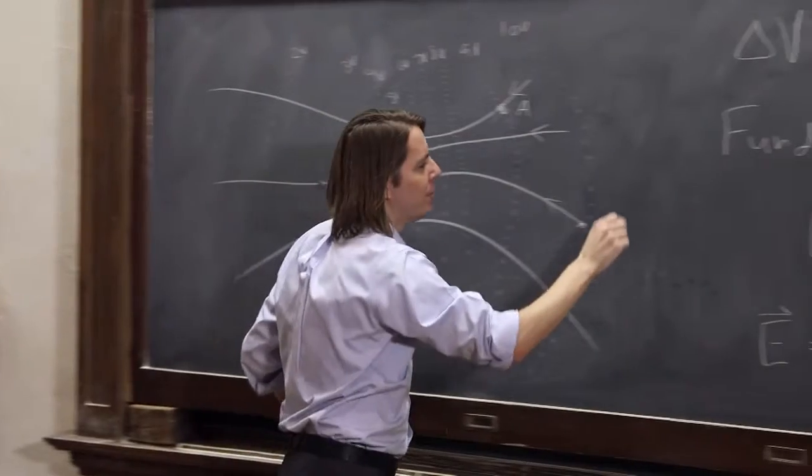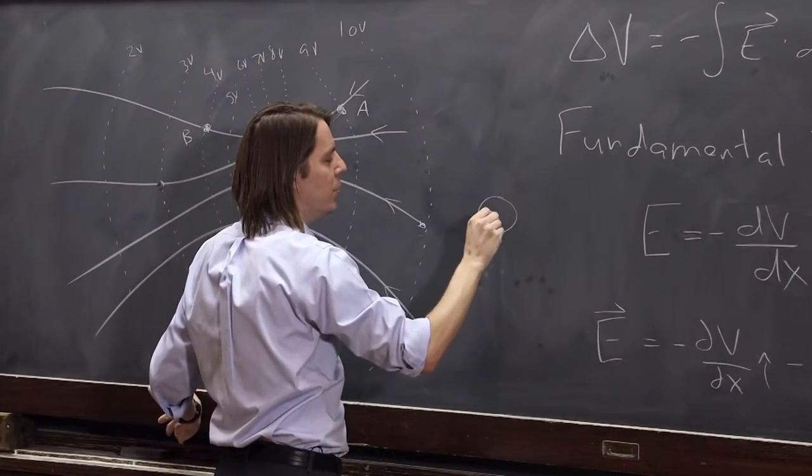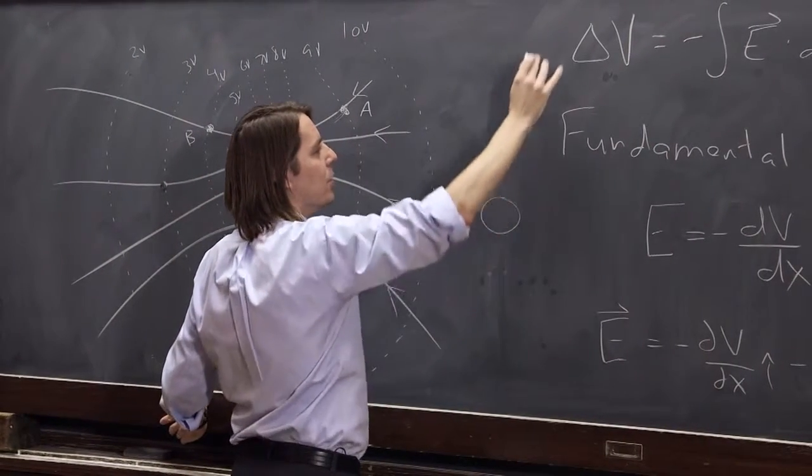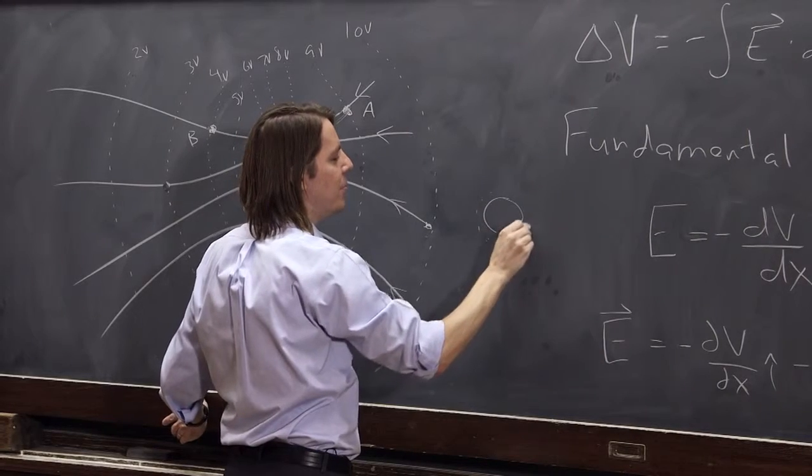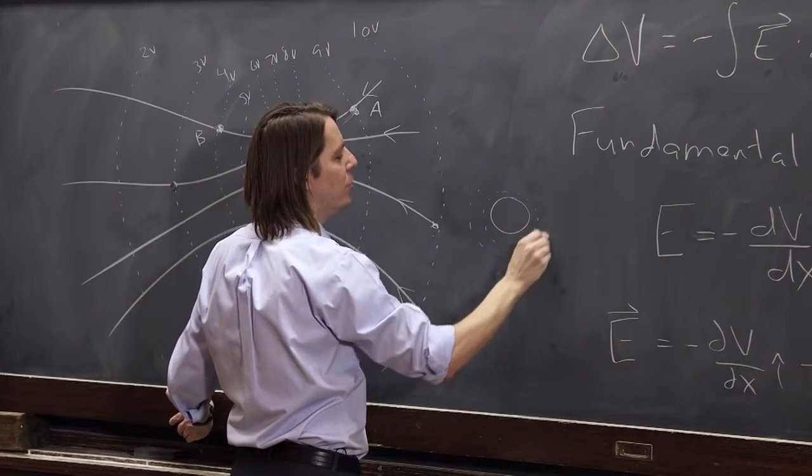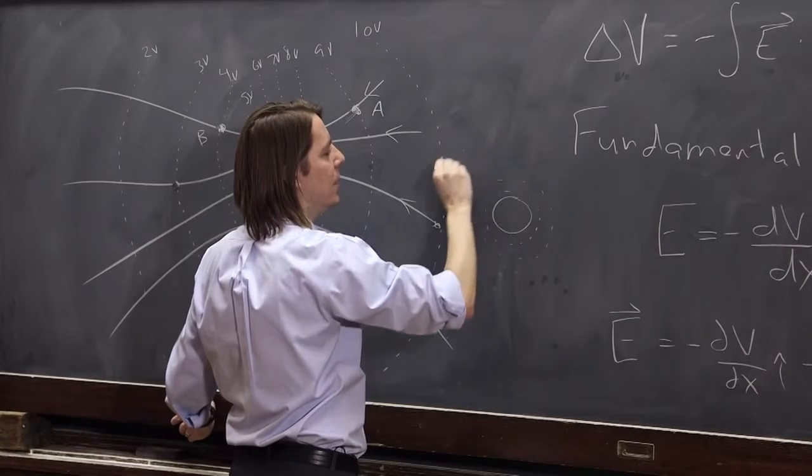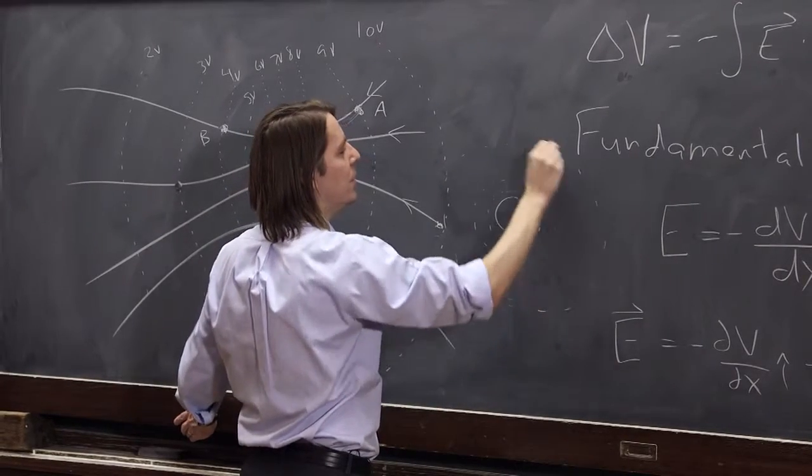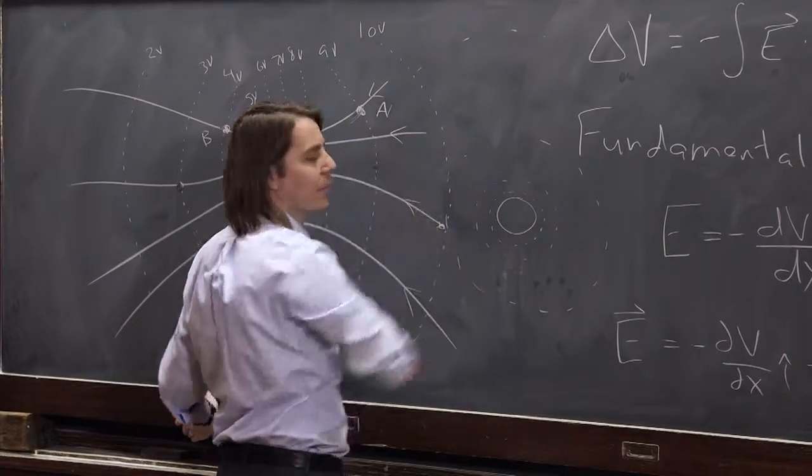If we draw them around a sphere, we know that the field gets lower as you go away from the sphere. So really, if you did equipotential lines that are at constant spacing, they would be close when you're close to the sphere, and they would get farther and farther away as you go farther and farther away from the sphere.